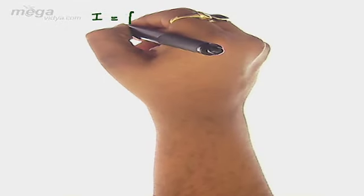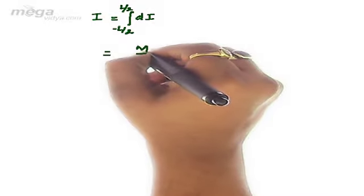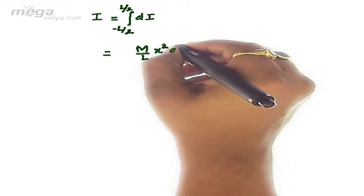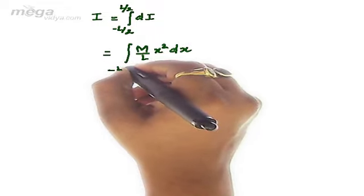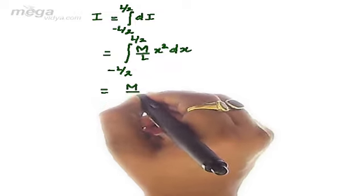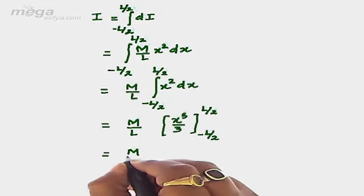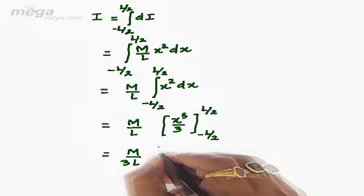The moment of inertia I can be calculated by integrating the elementary moment of inertia dI along the given limits. In this case, we will select limits from minus l by 2 to l by 2. It will come out to be equal to the integral of m upon l times x squared dx, and since m upon l is constant, it will be taken common, giving m upon 3l after integration.